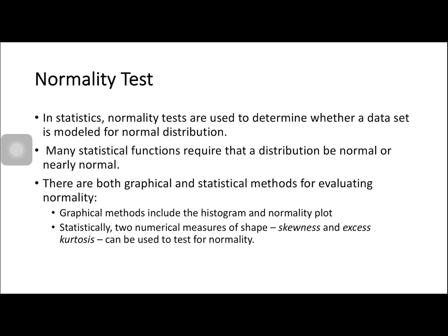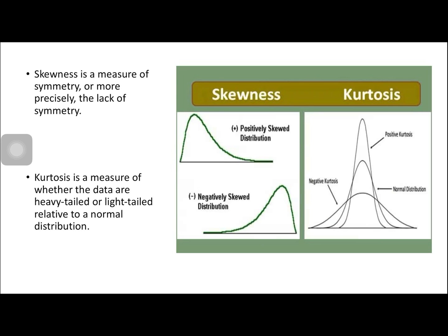For the normality test in statistics, it is used to determine whether a data set is modeled for normal distribution. Many statistical functions require that a distribution be normal or nearly normal. There are both graphical and statistical methods for evaluating normality. Graphical methods include the histogram and normality plot. Statistically, two numerical measures of shape — skewness and kurtosis — can be used to test for normality.